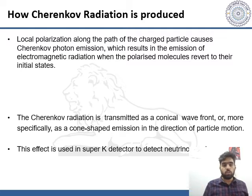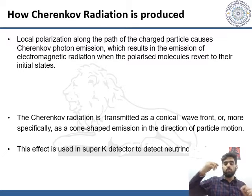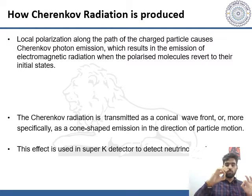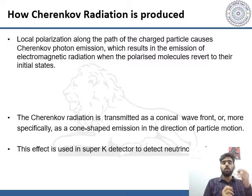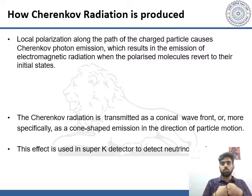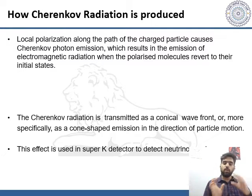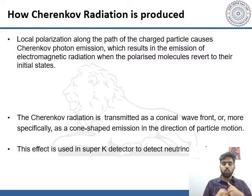Cherenkov radiation is produced by local polarization along the path of the charged particle, causing Cherenkov photon emission. When the charged particle moves through a transparent medium, it results in the polarization of nearby atoms, causing them to polarize or become excited, which results in the emission of electromagnetic radiation when those atoms revert back to their original state.